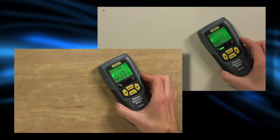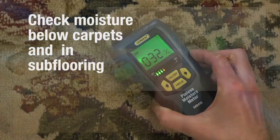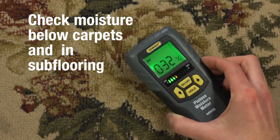Surface moisture will give higher readings than moisture deeper in. You can check for moisture below carpets and in subflooring.